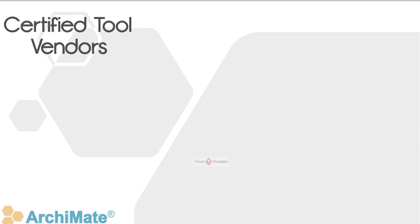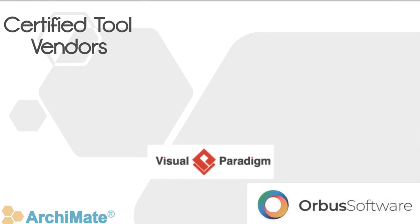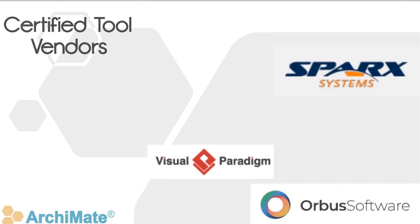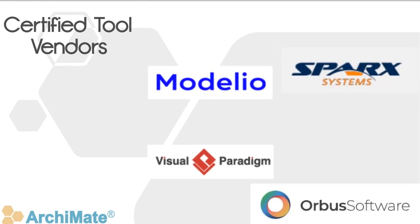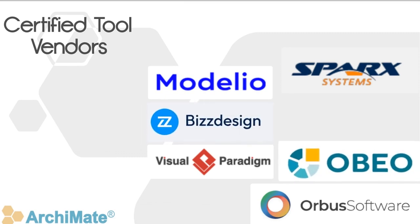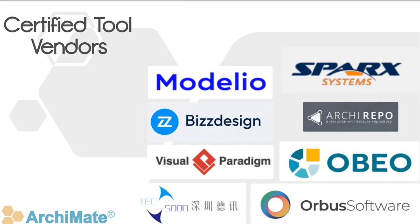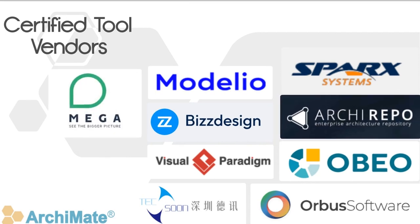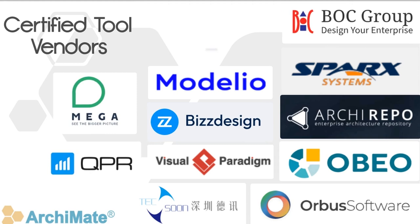The ArchiMate modeling language is an open, independent, and internationally recognized modeling language. It provides a comprehensive, graphical, and integrated approach to communicating about enterprise architectures. The ArchiMate modeling language has zero tie-ins to a specific tool, encouraging its adoption by many organizations.